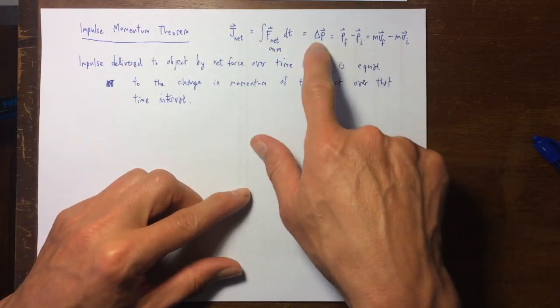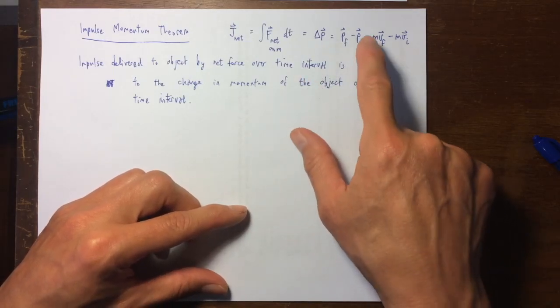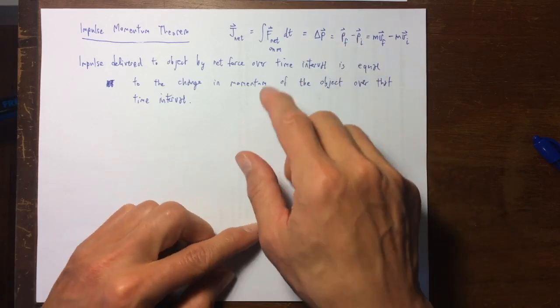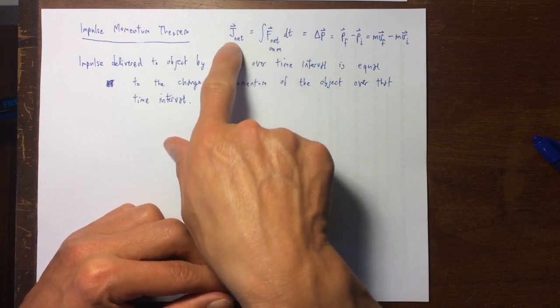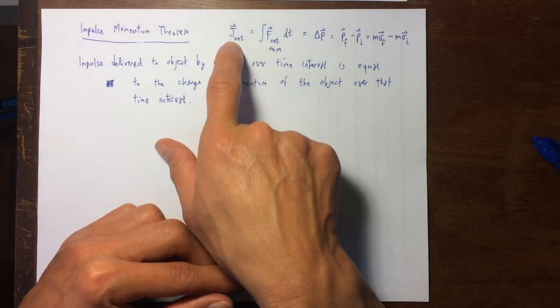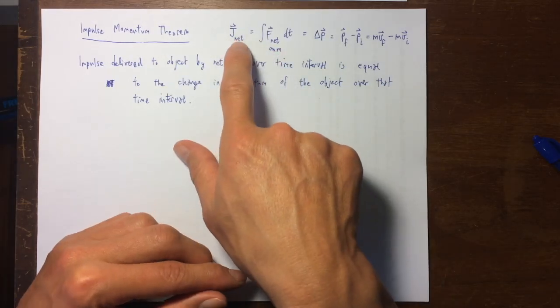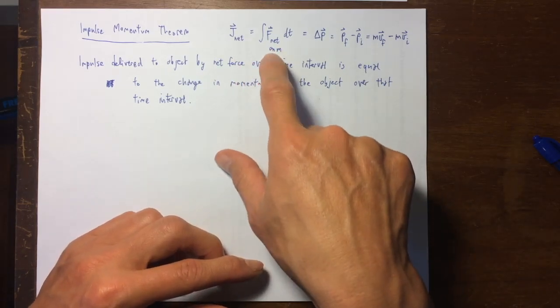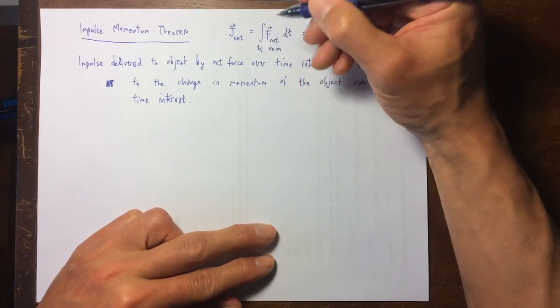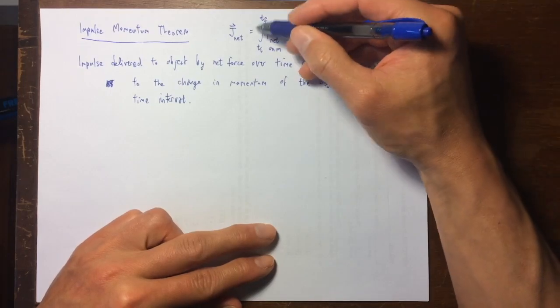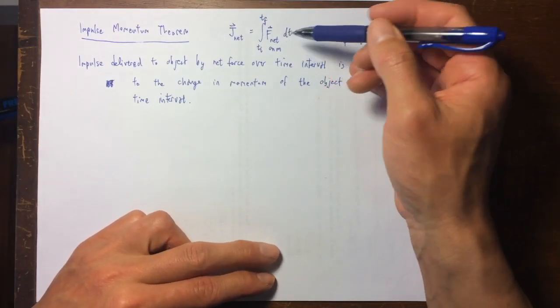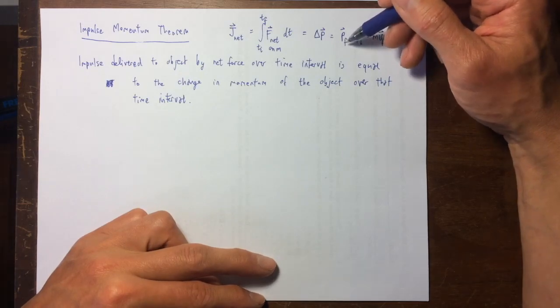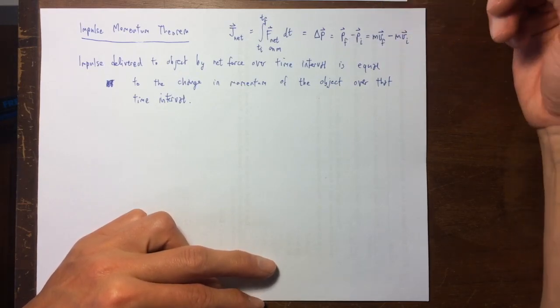It just said that there is an ultimate change in the momentum of an object, that is the initial and the final momentums have a difference, and that difference is equal to the total net impulse delivered to the object. And the way that impulse is delivered is by acting with a net force. So the net force acts from some t initial up to some final time, so it acts for a time duration or a time interval. And the impulse delivered during that time interval is equal to simply the difference in the value of the momentum at the end of the interval and the value of the momentum at the beginning of the interval.